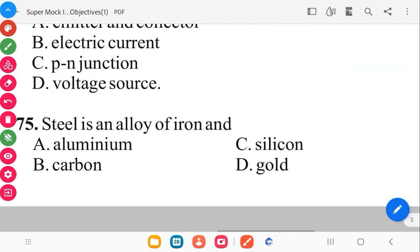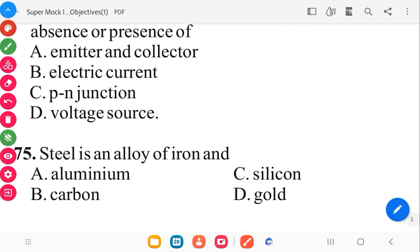Question 75. Steel is an alloy of iron and carbon. Question 75 in 3, 2, 1 is B, carbon. So iron and carbon gives you steel.